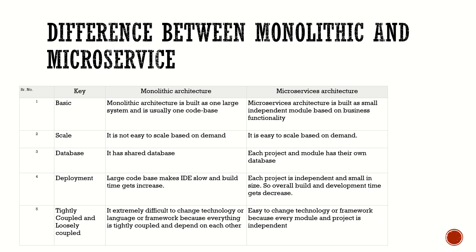Coming to the microservices approach, if there is a monolithic project, we can chop down those projects into small services. Those small services are independent modules and they can communicate with each other. This type of developing a project is called microservice architecture — built as small independent modules based upon the business functionality. For the database, monolithic has a shared database since every module shares it, but for microservice architecture, we can have multiple databases for multiple modules.